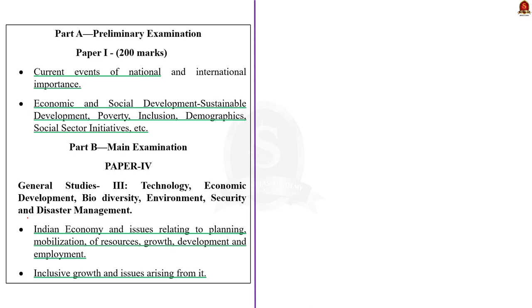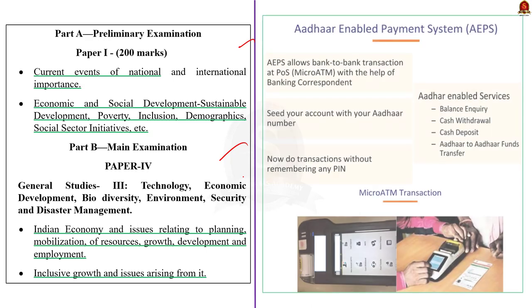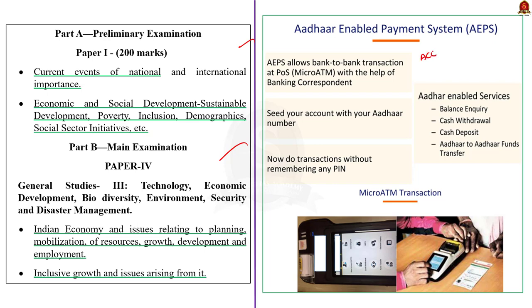The Aadhaar-Enabled Payment System (AEPS) is a payment service which empowers a bank customer to use Aadhaar as their identity to access their Aadhaar-enabled bank account and perform basic banking transactions like balance inquiry, cash deposit, cash withdrawal, and remittances through a business correspondent. This initiative was started by the joint efforts of the Reserve Bank of India and the Indian Banks' Association, and later developed by the National Payments Corporation of India. AEPS leverages Aadhaar online authentication and enables Aadhaar-enabled bank accounts to be operated anytime, anywhere through micro ATMs.